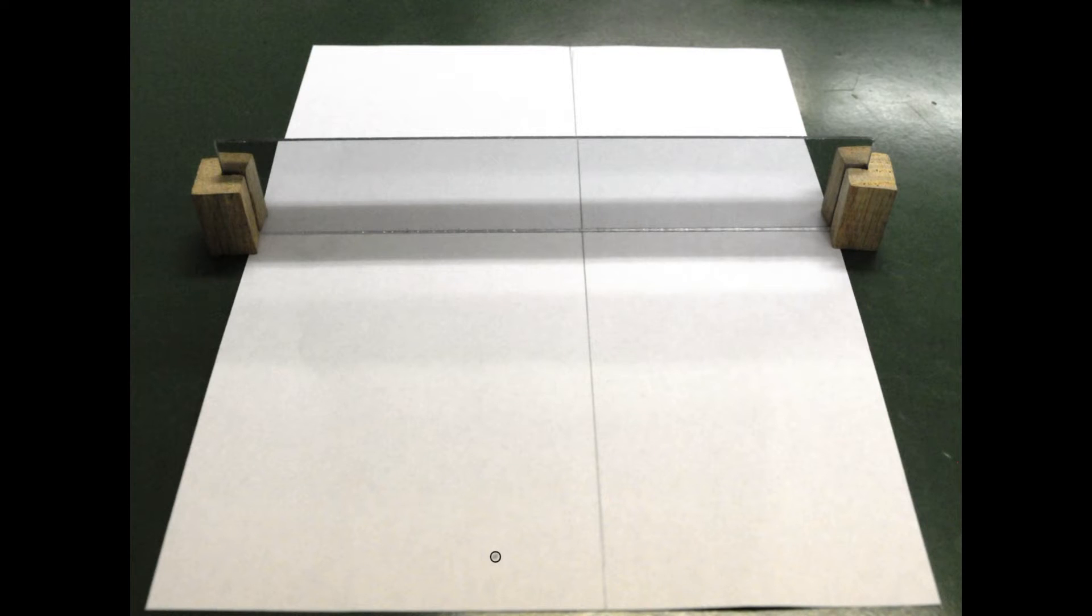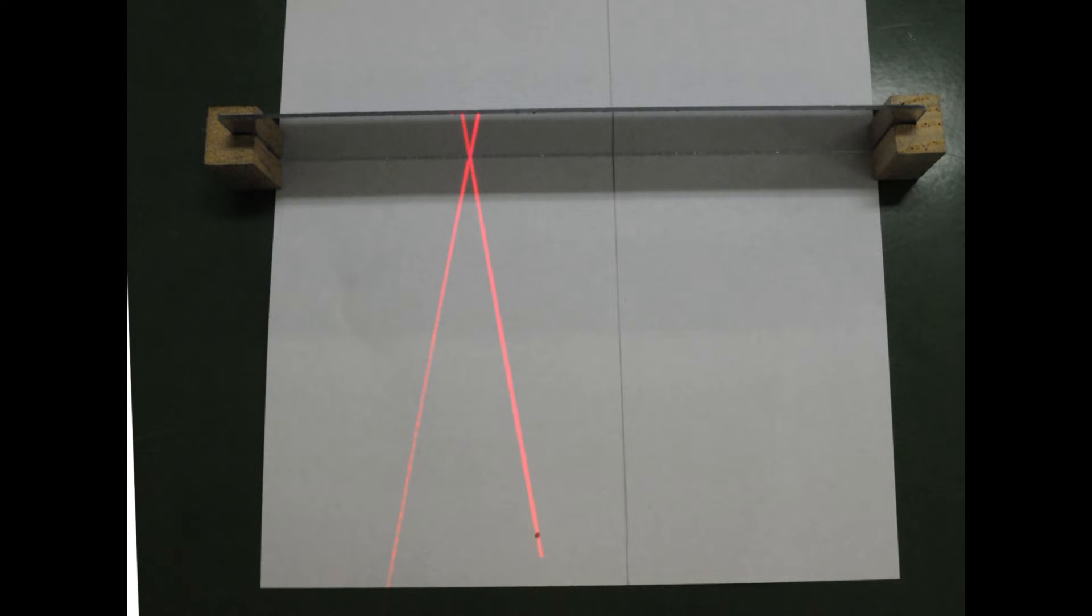In this experiment we place a plane mirror along the center line of a sheet of paper and place a dot to represent the tip of the object off axis. A laser leveler is used to generate a ray passing through the tip of the object in some direction. Use a pencil to trace both the incident and reflected rays.